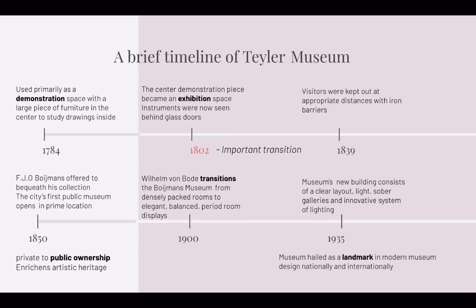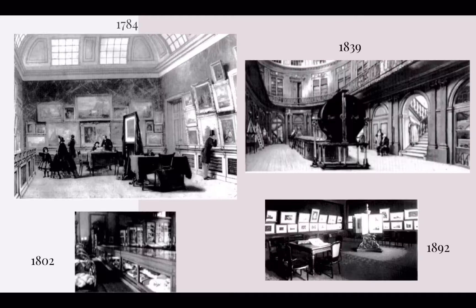In 1900, curator Wilhelm von Bode transitioned the museum from its densely packed rooms to elegant, balanced period room spaces. Thirty-five years later, the museum witnessed curators from the Netherlands and abroad helping it transition further, resulting in a clear layout, light and sober galleries, and innovative systems of lighting. This is why the museum became hailed as a landmark in modern museum design both nationally and internationally, owing to its very innovative system of curating.